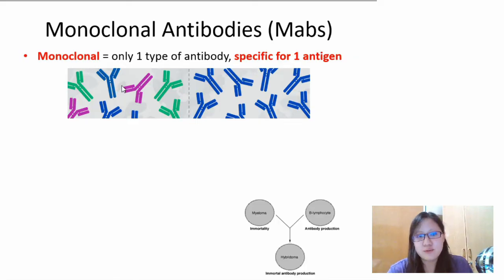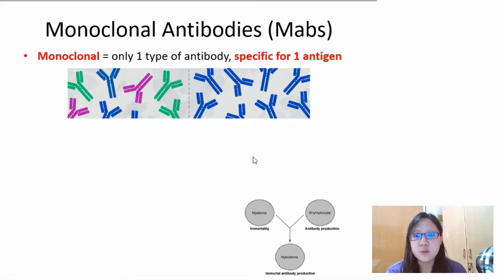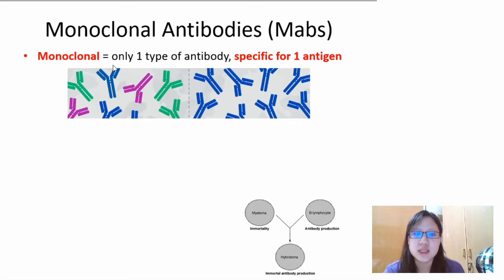So why is it that we want to talk about monoclonal antibodies? This is because we want to produce drugs. We want to make this in the lab and use it as a drug to help other people when they need extra antibodies or need to be used to cure toxin. You want to know what you're producing, and you want to make sure that in your drug there's only one type of antibody instead of several.